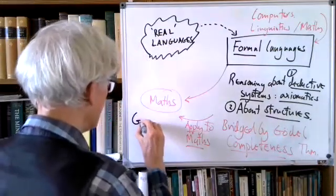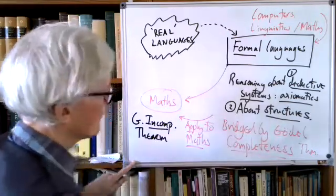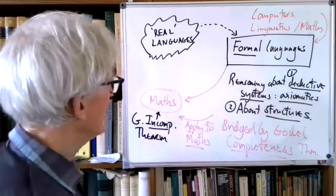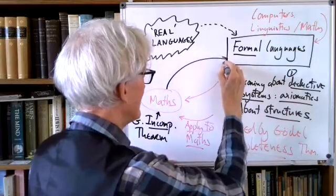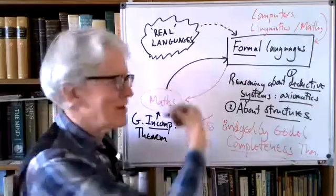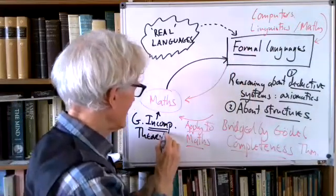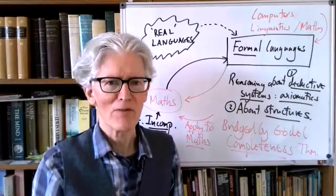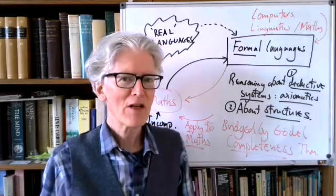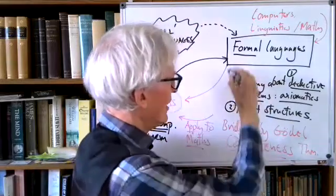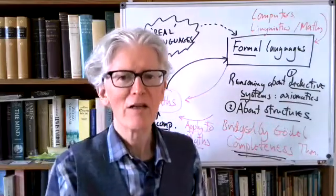So the Gödel incompleteness theorem: the mathematics we use on our deductive systems gives us results which feed back. We apply mathematics and get results about formal languages, but then Gödel's incompleteness theorem tells us the limits of that process. This, if we have time, will be towards the end of the course — we'll discuss the incompleteness theorems. But for the moment I shall be doing some recapitulation, talking about deductive systems and axiomatics, before we move on to the completeness theorem, which is our main next task.